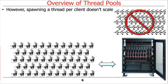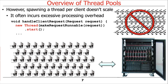What we'd prefer not to do, if we can avoid it, is have a thread per client. Say we have a million clients — we probably don't want a million threads. If we use Project Loom at some point we may be able to, but for right now with traditional Java platform threads, we don't want that many because they will overwhelm the resources.